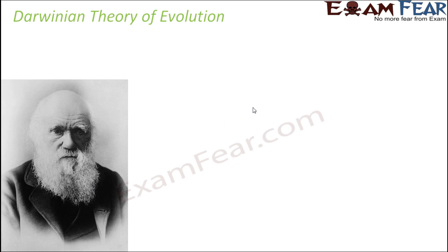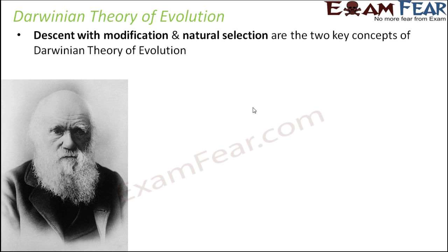So, Darwinian theory of evolution. Darwin's theory had two important pillars: one was natural selection, and the other was descent with modification. These were the two important concepts of Darwinian theory of evolution, and we will talk about each of them one by one.